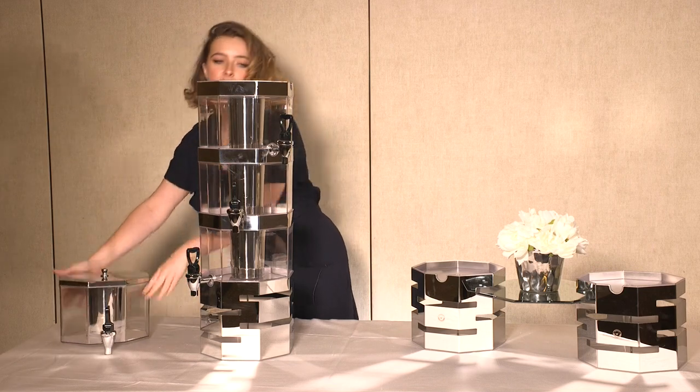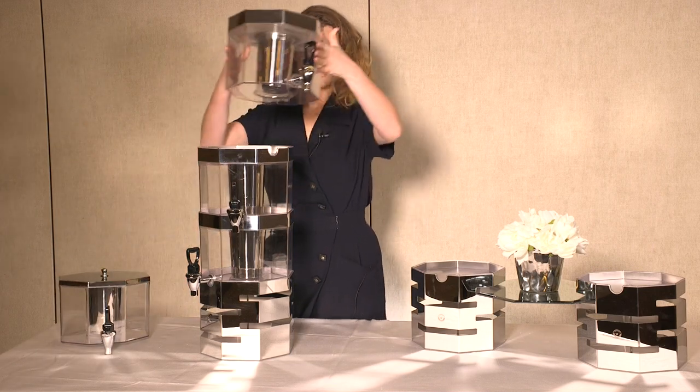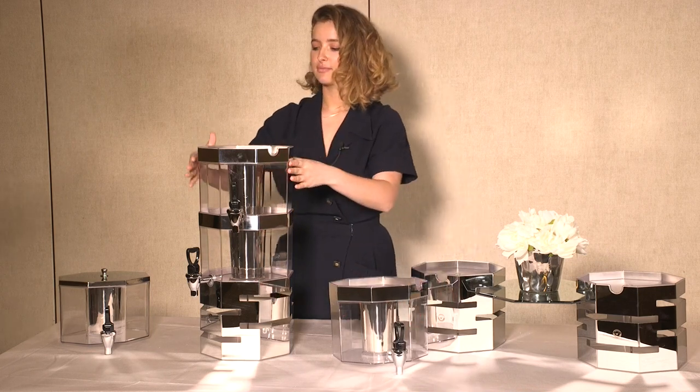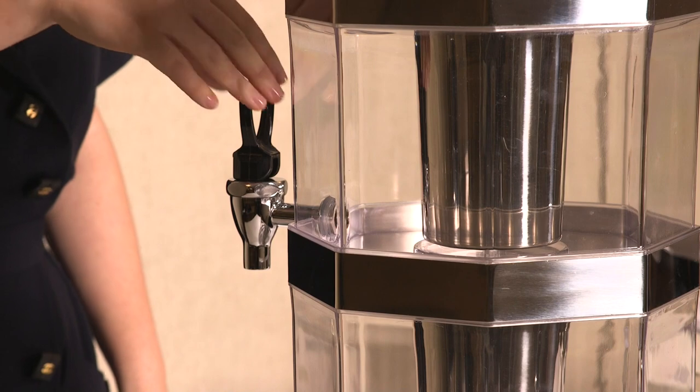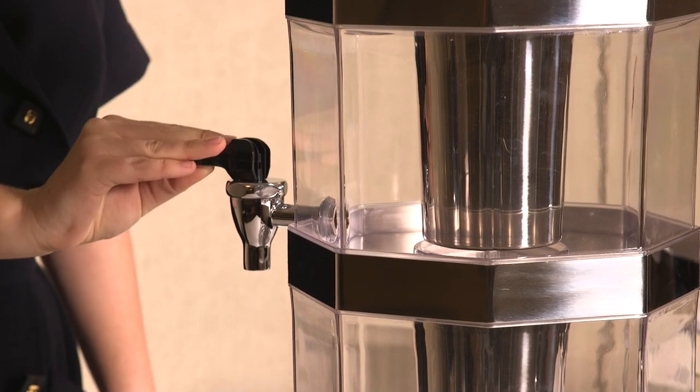The exact measurements of the juice dispenser are the frame, one millimeter, cover, also one millimeter, and the body 0.7 millimeters, which are all ideal and perfect for a sleek and efficient juice dispenser.